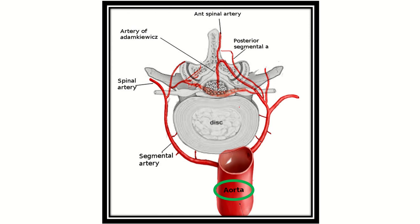In another picture we can also see a similar diagram in larger detail. From the aorta, segmental arteries arise, and these segmental arteries then give off smaller branches to the vertebral body and other areas of the vertebral column.